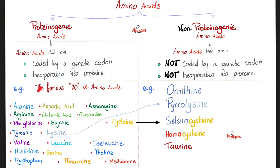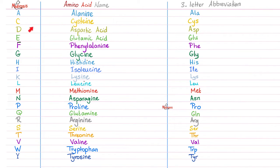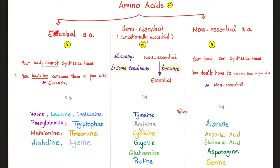Do you remember the 20 proteogenic amino acids? Each one has a name, a one-letter abbreviation, and a three-letter abbreviation. Today we're concerned with phenylalanine and tyrosine. Remember, phenylalanine is essential — you have to eat it in your diet because your body cannot make it. However, tyrosine is semi-essential or conditionally essential, which means normally you do not have to eat it because your body can make tyrosine from phenylalanine.